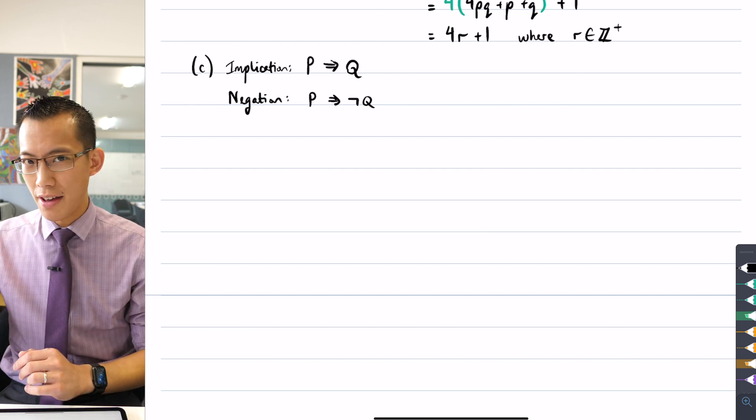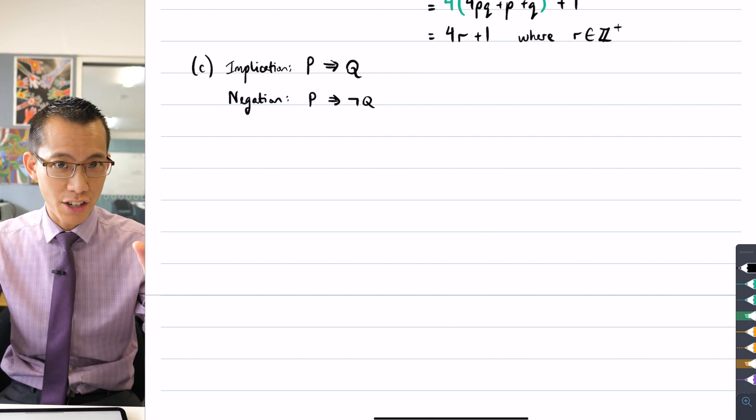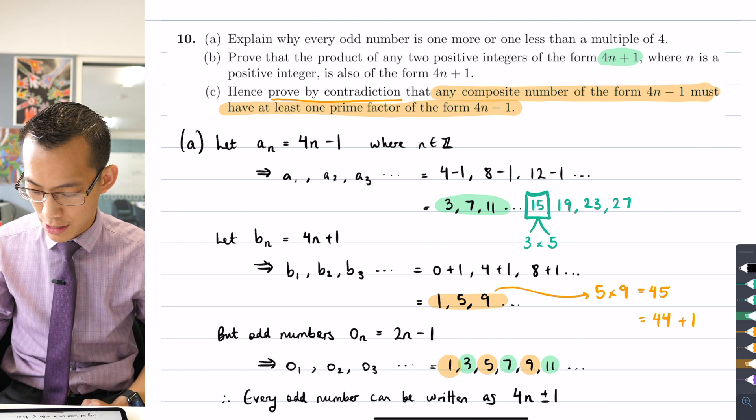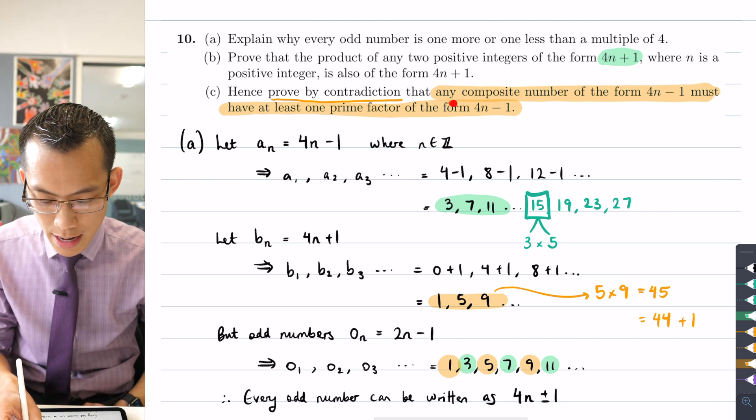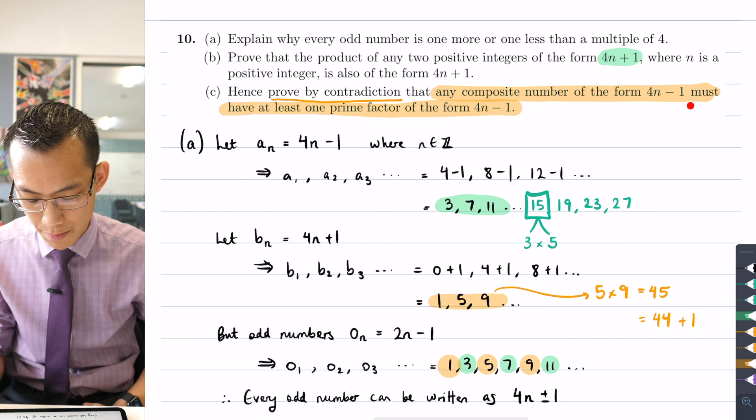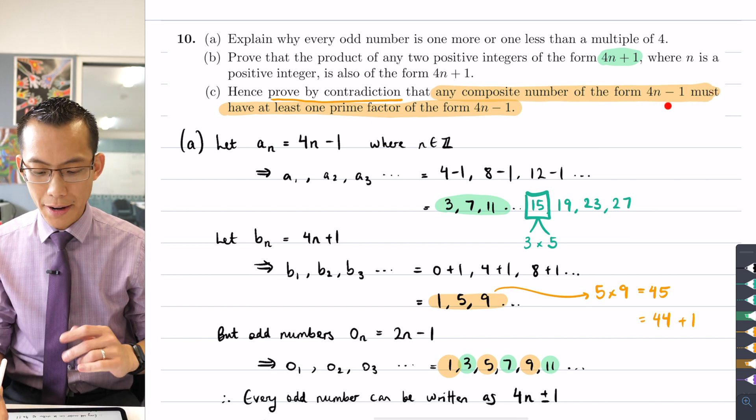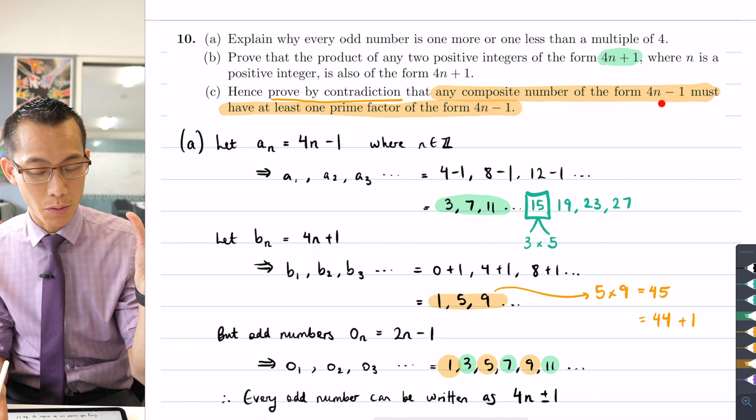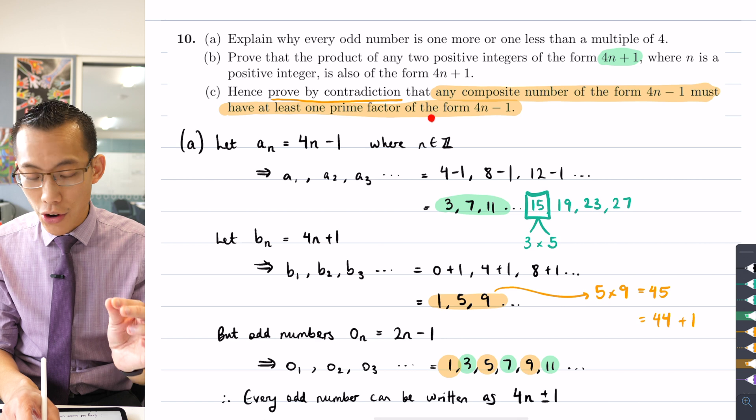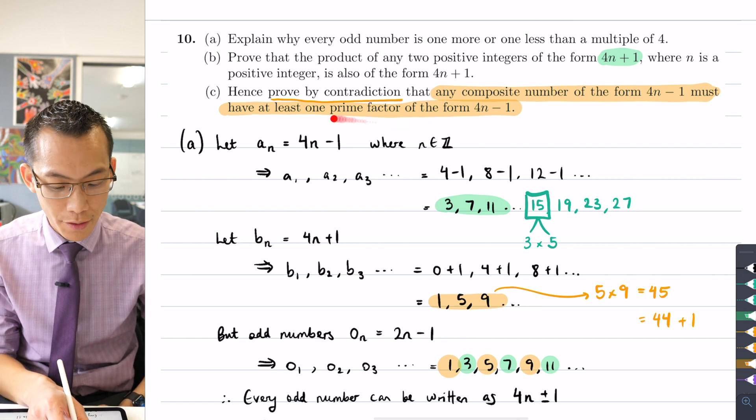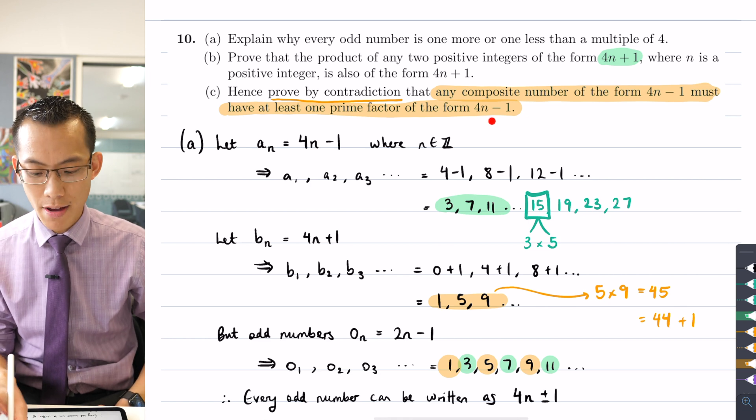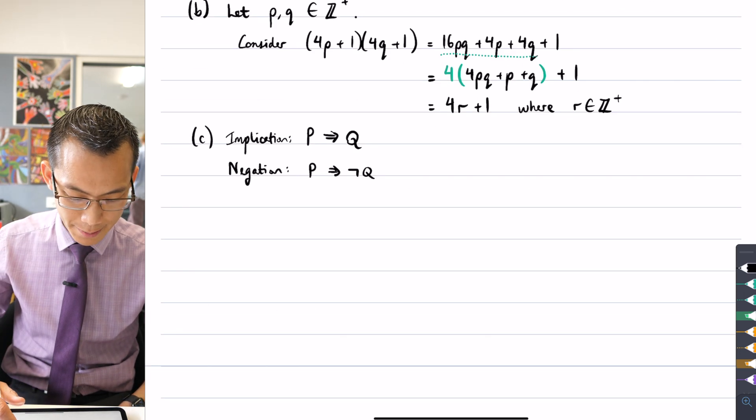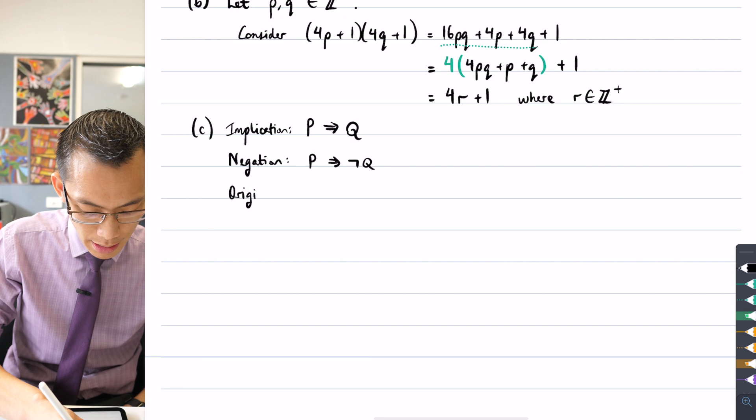So let's have a go, let's try our hand at writing it in the p implies q or if p then q kind of form. So you can see if you have a look carefully, there are two halves to this implication. If you follow along with me, there's this part here, any composite number of the form 4n minus 1, and then it says must. So I could say that in this way, if you have some sort of composite number of this form, then, and then here comes the second part, the consequent, not the antecedent, then you can know that at least one of the prime factors will be of the form 4n minus 1.